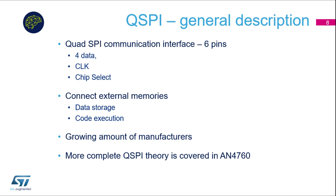Now we will have a look at a few slides about the Quad SPI interface available on STM32 devices. The Quad SPI interface uses six pins in total: four data lines — this is why the name is 'quad' — one clock signal, and one chip select. It allows us to extend the memory space of our embedded system, for example for graphic data or additional code, because it is possible to execute code directly from Quad SPI memory.